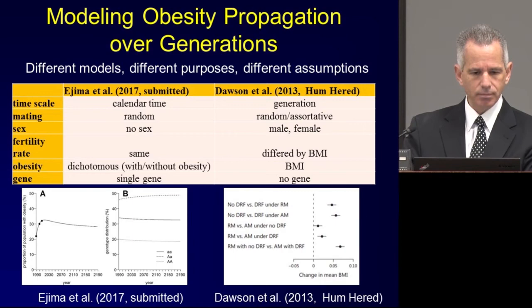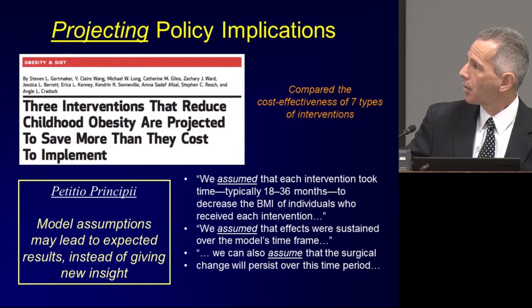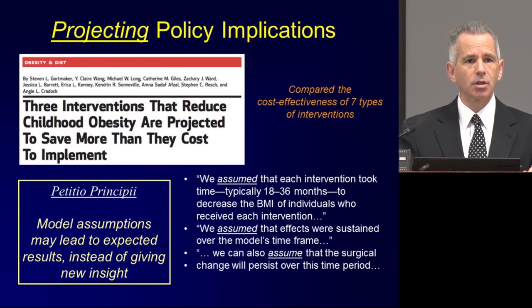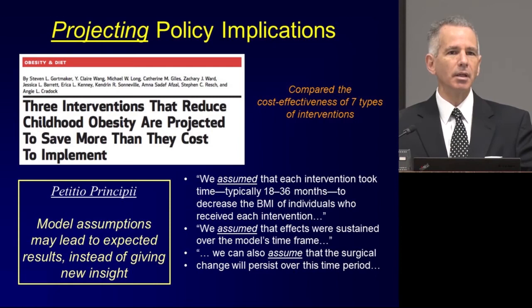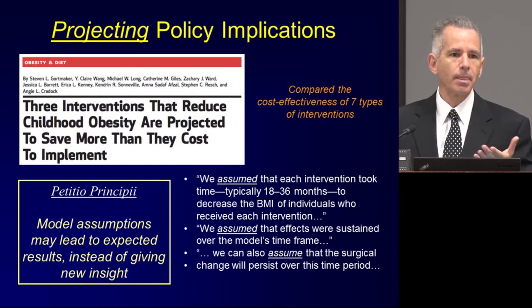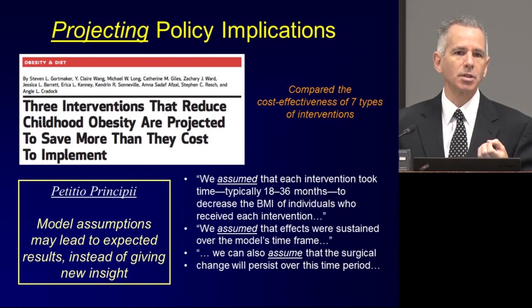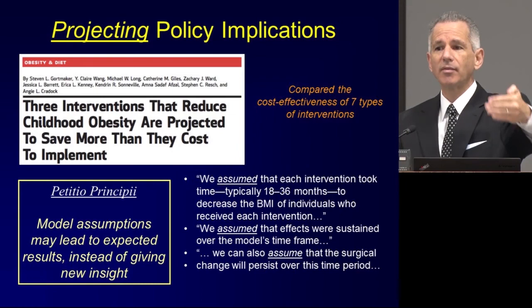This is particularly clear when talking about agent-based models or other models for projecting policy effects. Someone once said that all truths are tautological. If you say 2x equals 4 and derive that x equals 2, someone might argue you haven't really derived anything — it's just a restatement, a tautology. In some sense, all truths are tautological, but some are more apparent than others. If you've made heavy model assumptions — for instance, assuming your treatments are effective, then projecting their long-term efficacy and concluding you have long-term efficacy — you've just gotten out what you put in. That's called petitio principii, or begging the question.